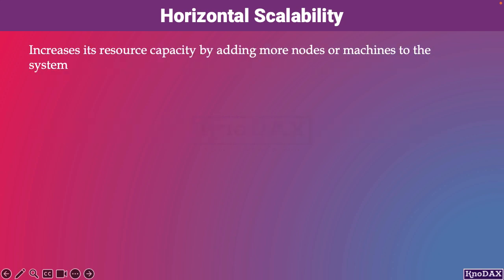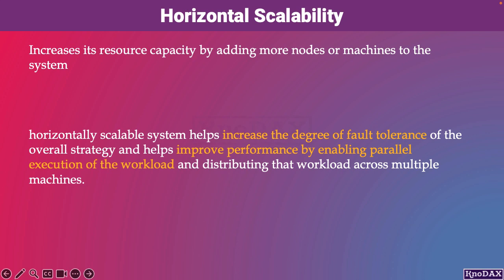A horizontally scalable system increases its resource capacity by adding more nodes or machines to the system. Compared to a vertically scalable design, the horizontal approach is preferred. The reason is that a horizontally scalable system helps increase the degree of fault tolerance of the overall strategy and helps improve performance by enabling parallel execution of the workload and distributing it across multiple machines.